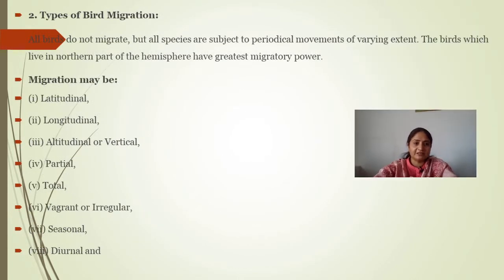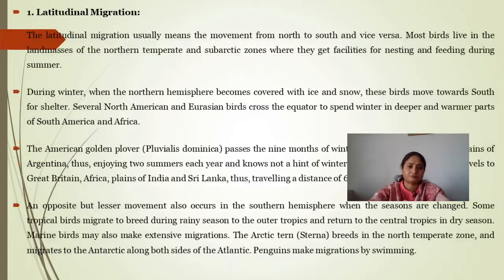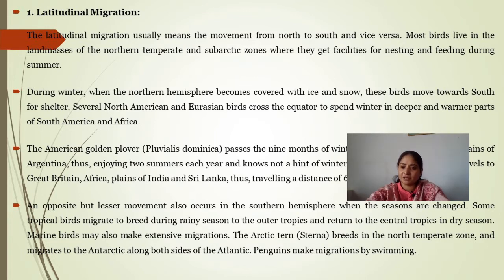The types of bird migration may be latitudinal, longitudinal, altitudinal, vertical, partial migration, total migration, erratic and irregular migration, seasonal migration, and diurnal migration. Latitudinal migration usually means movement from north to south and vice versa. Most birds live in the land masses of the north temperate and sub-arctic zones where they get facilities for nesting and feeding during summers.